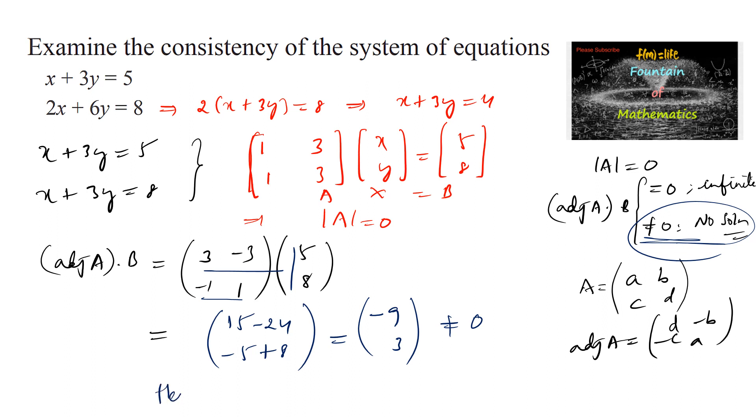If it is not equal to the 0 matrix, we can conclude no solution. Hence the given system has no solution, so it is inconsistent.